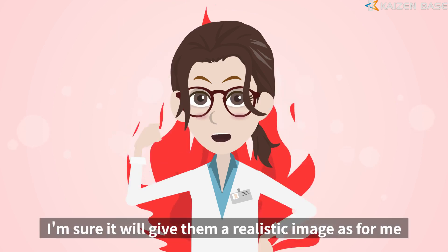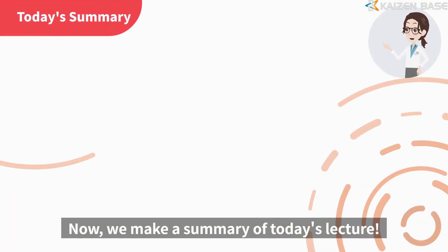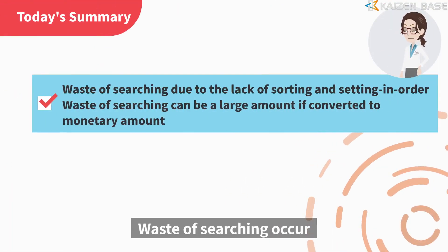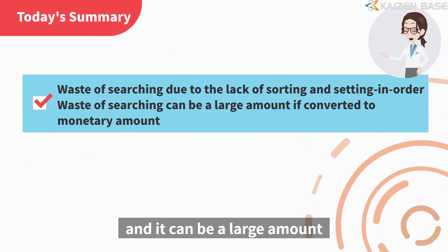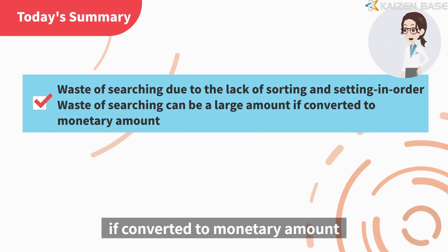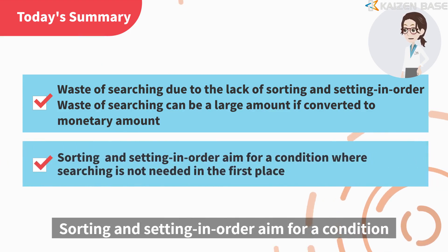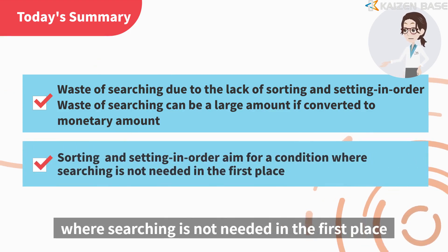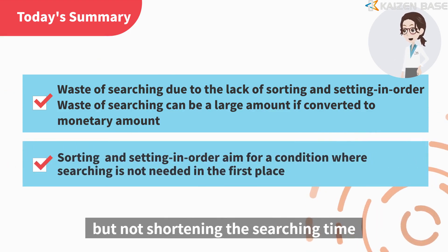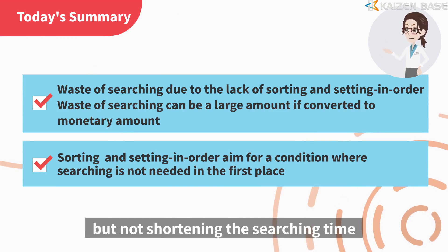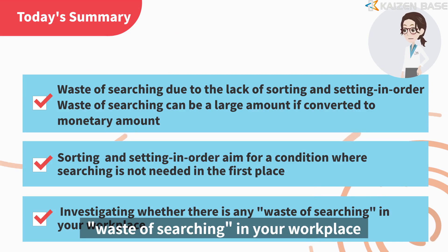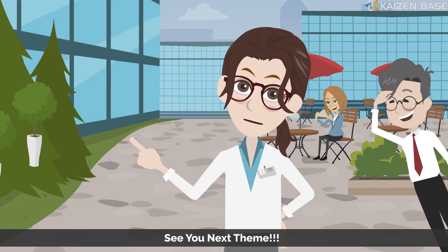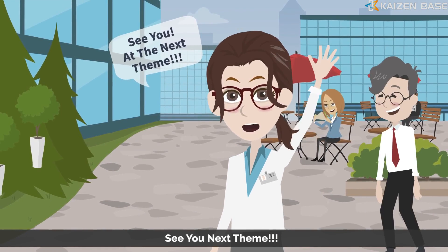I'm sure this game will give the people on site a realistic image. Now let's make a summary of today's lecture. Waste of searching occurs due to the lack of sorting and setting in order, and it can be a large amount when converted to monetary terms. Sorting and setting in order aim for a condition where searching is not needed in the first place, not just shortening the searching time. Please investigate whether there is any waste of searching in your workplace. That's all about today's lecture. See you at the next theme.